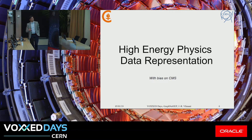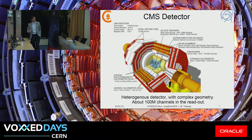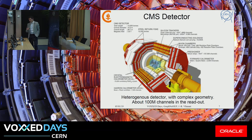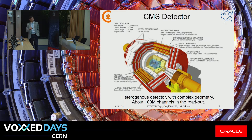A quick word on data representation with a strong bias on CMS, since this is the experiment I'm working on, but this applies to many other experiments at CERN and throughout the world. The CMS detector in a nutshell — I'm not going to go through the details — but this is a very heterogeneous detector with complex geometry and a lot of channels in the readout. If you want to try to apply deep learning brute force with this type of detector, there are going to be multiple problems with the complex geometry, number of channels, and the heterogeneous nature of the detector.